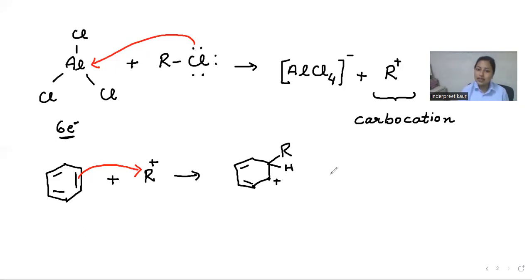Now, what happens? This negative charge from AlCl4, next step is what will happen. AlCl4 will remove this hydrogen to regain the aromaticity of the ring.